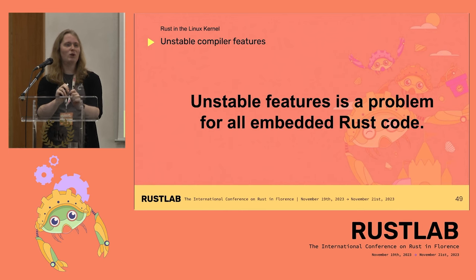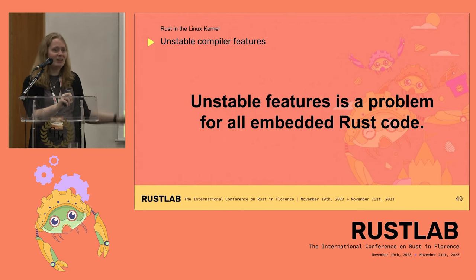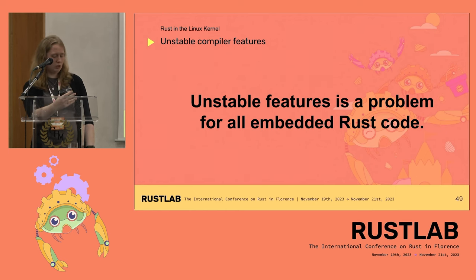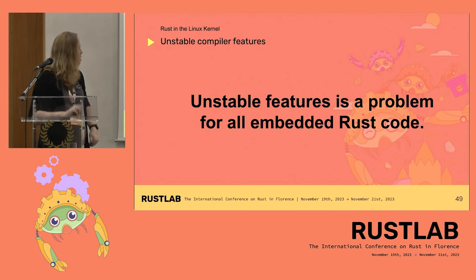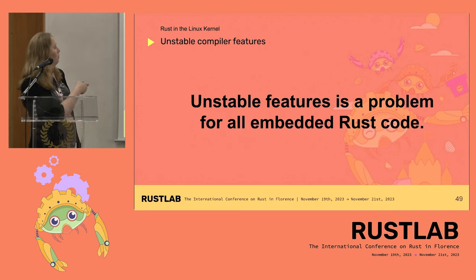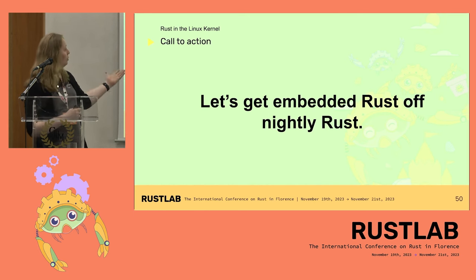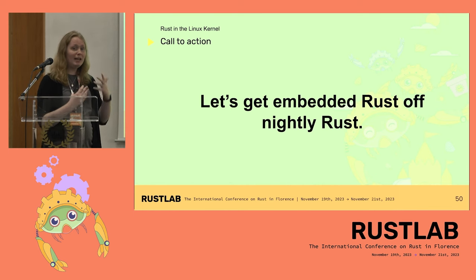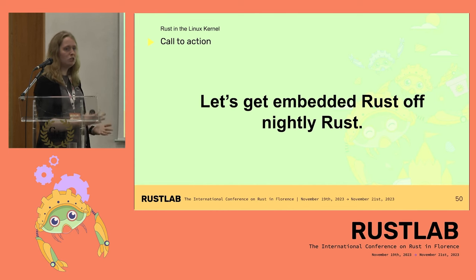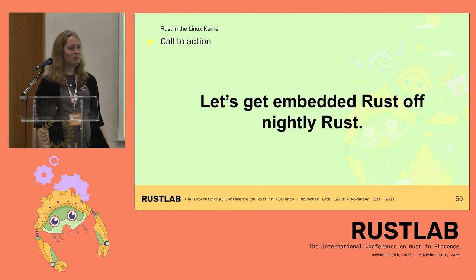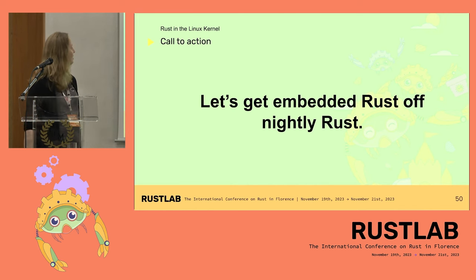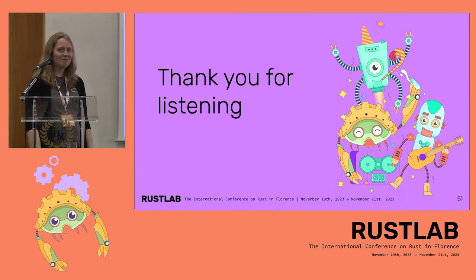This is actually a point I want to make: these kinds of things come up in all embedded code. It's not just the kernel — it's also microcontrollers. So if you want to help Linux and the kernel succeed, of course you can come and join us and write a driver. But another thing you can do is work on these unstable features and get them stabilized. I really want to see Rust on embedded systems on stable Rust. Thank you for listening.